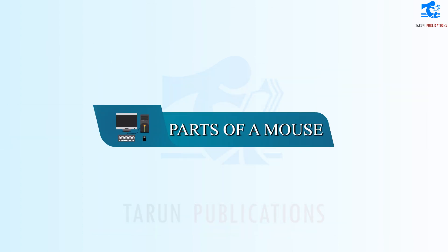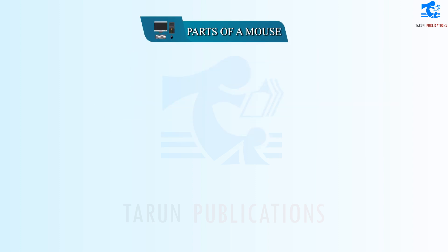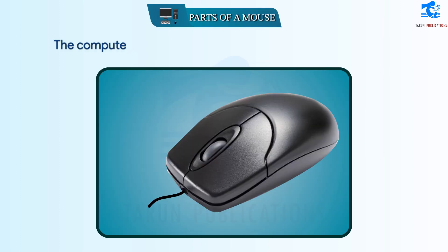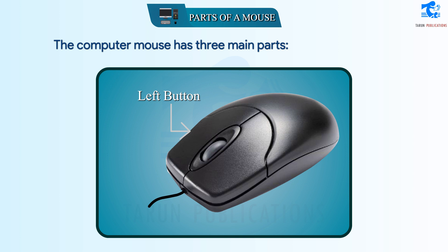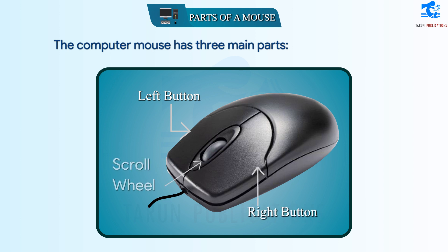Parts of a Mouse. The computer mouse has three main parts: the left button, the right button, and the scroll wheel.